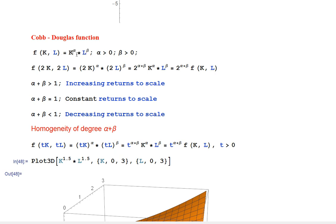Usually students do not understand the role of the exponents alpha and beta. We assume that both of them are positive. The best way to learn about their role is to do a little exercise: we ask what happens to the output if the inputs are doubled. Instead of the original K and L, we use twice as much capital and twice as much labor, plugging in 2K and 2L.